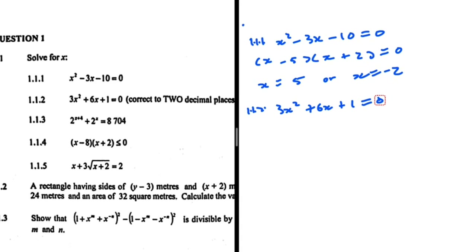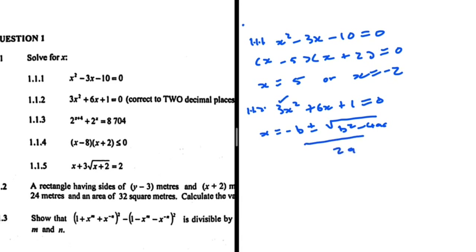This is another easy one — sticking to the basics. We're just using the quadratic formula, so we're going to say x equals minus b plus or minus the square root of b squared minus 4ac, all divided by 2a. Here, a is the coefficient of x squared, b is the coefficient of x, and c is the constant.